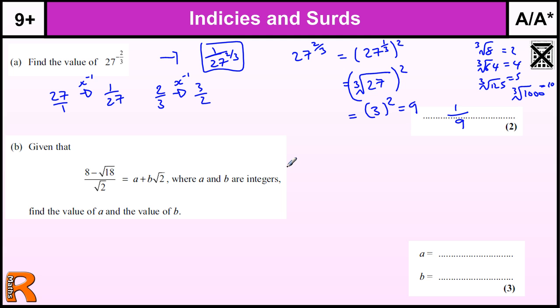You would get one mark for either reciprocating, so putting the 1 over 27 to the 2/3, or for finding that 27 to the 2/3 is 9. So you've got something there you would get a mark for.